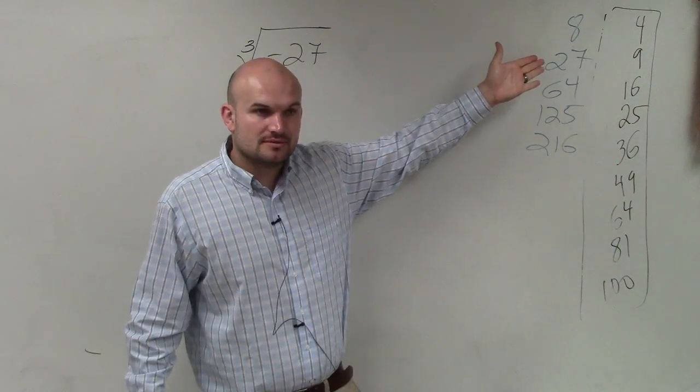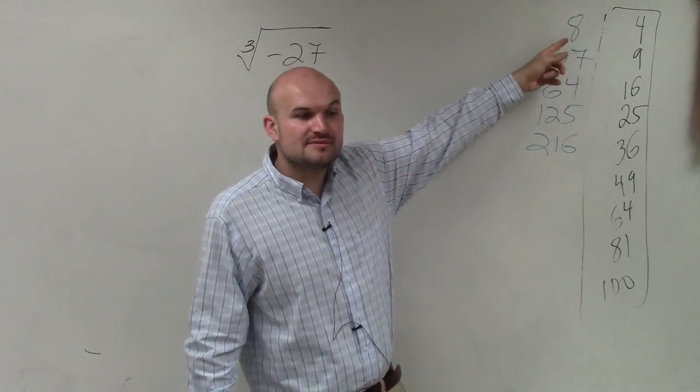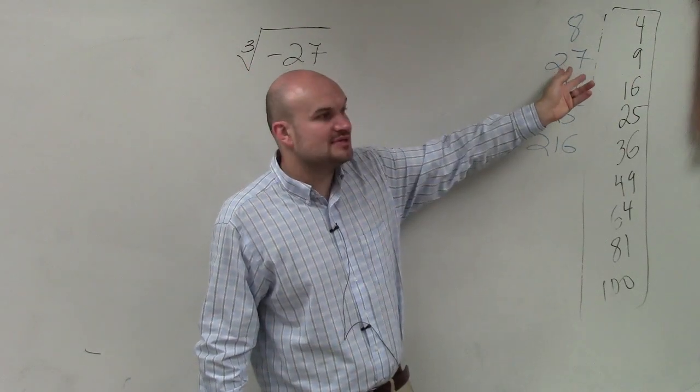These are what we call cube numbers. These are numbers you can take the cube root of because 2 times 2 times 2 is 8. 3 times 3 times 3 is 27.